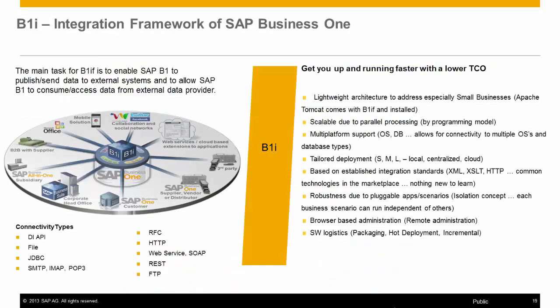The main task for the SAP Business One Integration Framework is to enable SAP Business One to publish and send data to SAP systems as well as external systems, and to consume and access data from any external data provider. Many connectivity types are available, such as flat file, web services, JDBC, FTP, and many more — these are built-in, ready-to-use connectivity types available once the solution is installed.